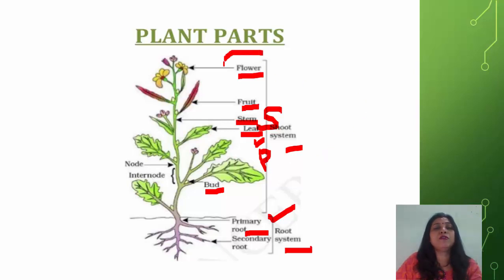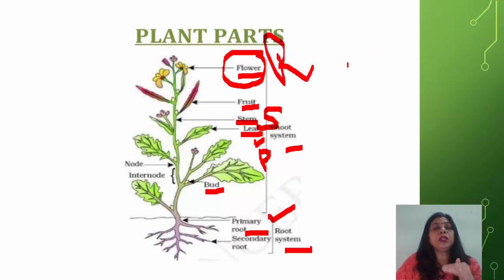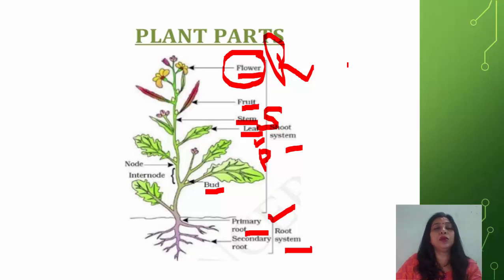The leaf has the function of photosynthesis — that means leaves prepare food for the plant. The flower helps in reproduction; reproduction that takes place with the help of flowers is sexual reproduction, which we will discuss in Part 2. The fruit contains seeds, by which we can grow more and more plants.